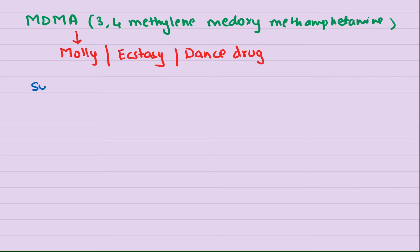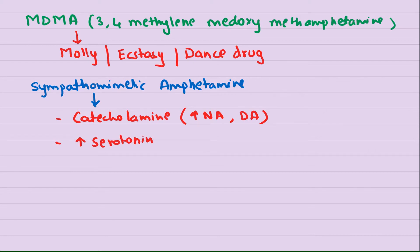Now, how does MDMA work? MDMA is basically a sympathomimetic amphetamine. This sympathomimetic amphetamine-like action will basically increase the endogenous release of catecholamines. So catecholamine release will increase, which causes an increase in noradrenaline and dopamine levels. Along with that, it will also cause an increase in serotonin levels. It not only causes an increase in catecholamine and serotonin levels, but it also inhibits their reuptake at the neurotransmitter or synapse level.